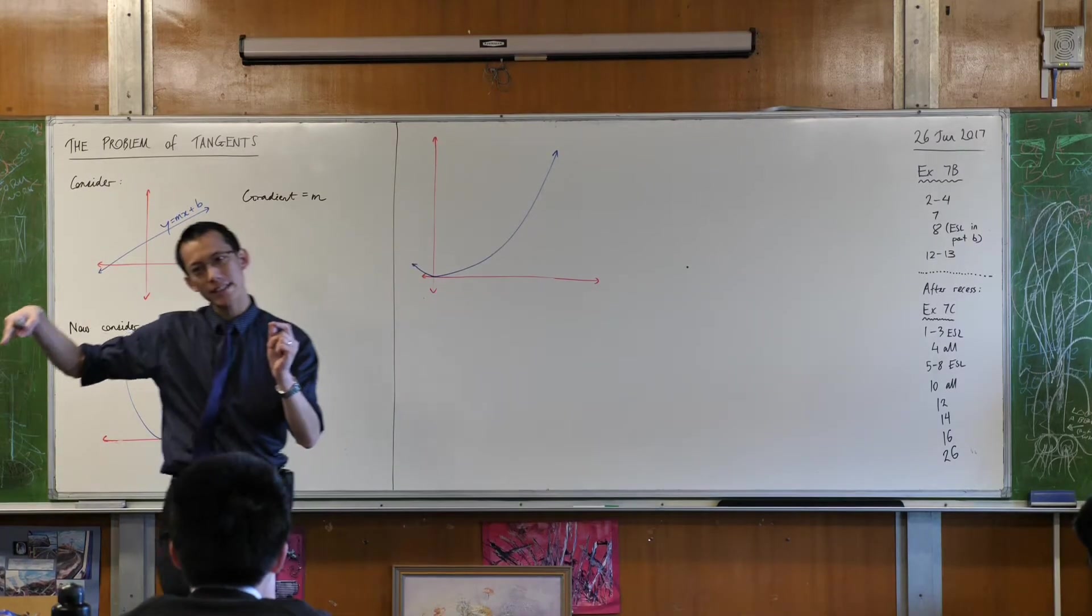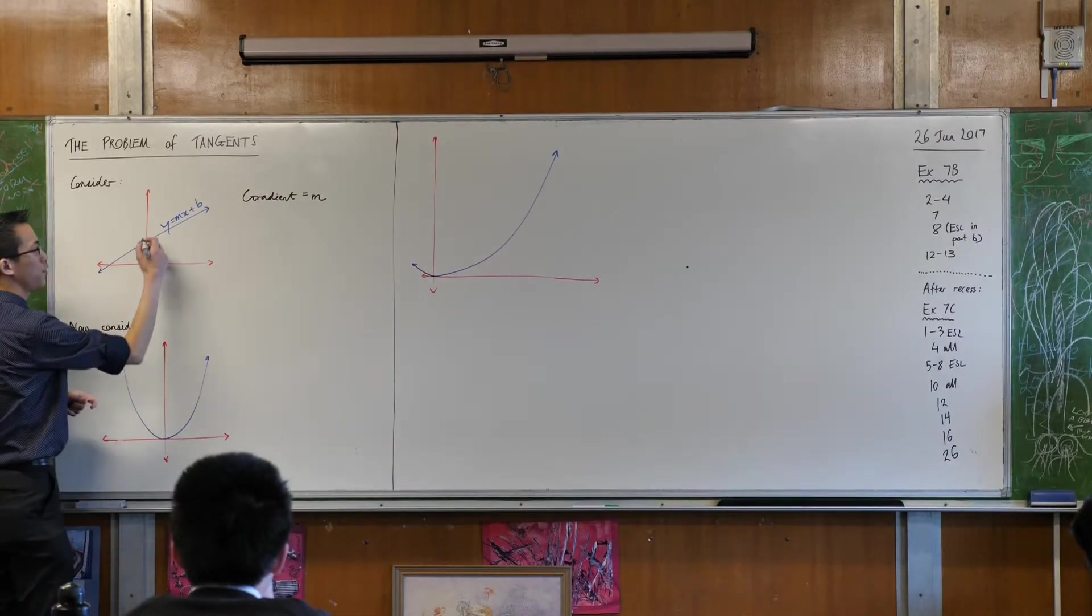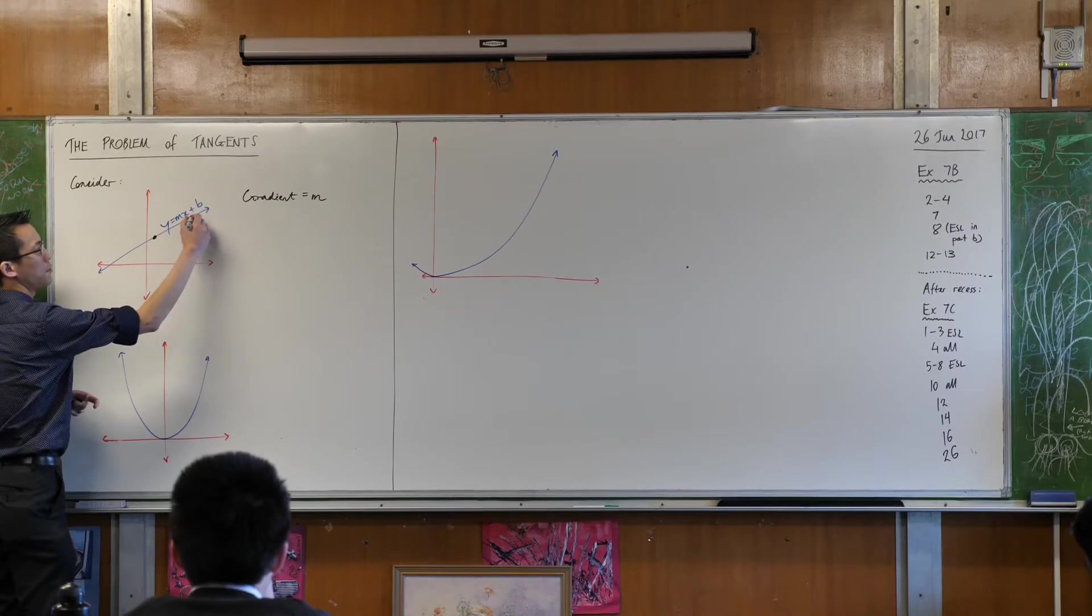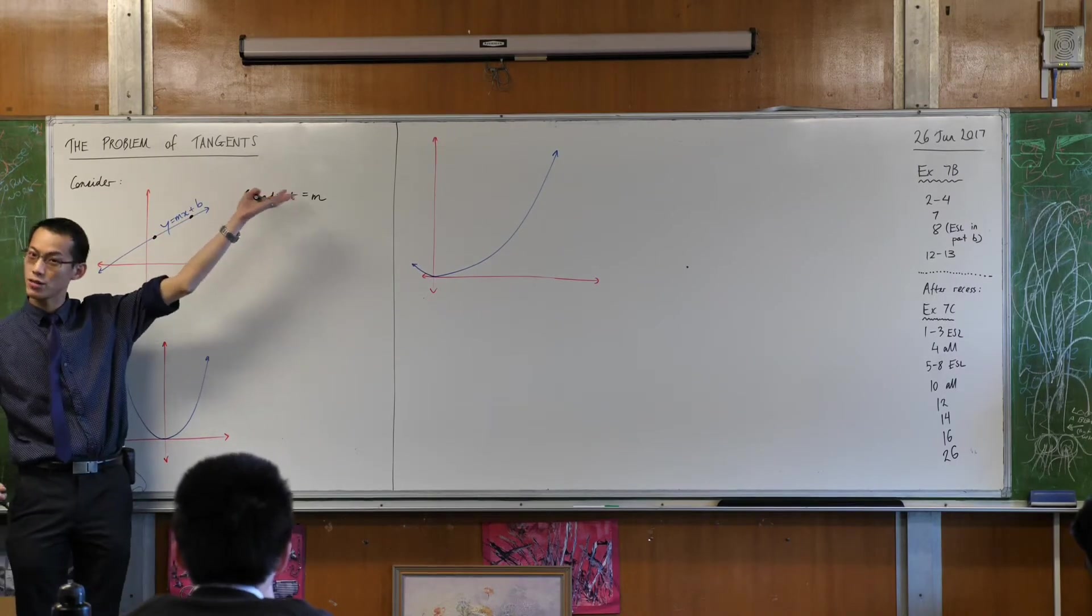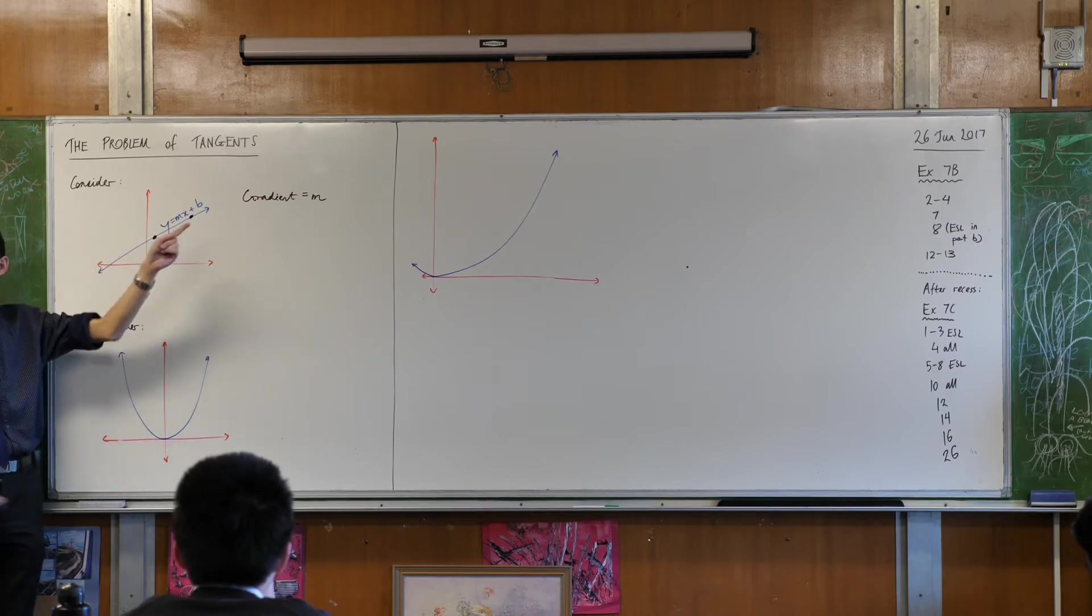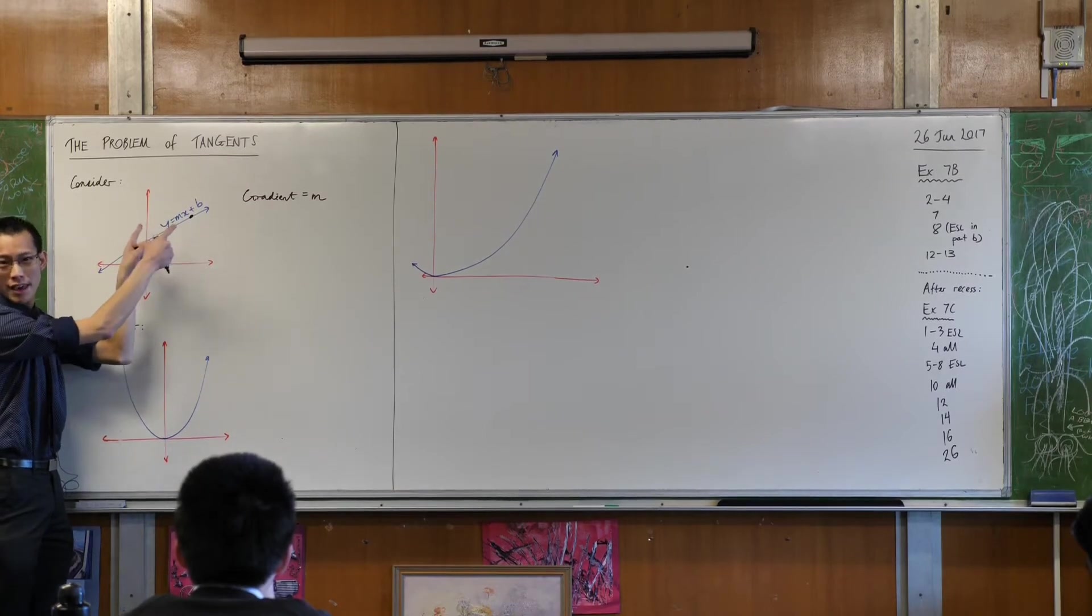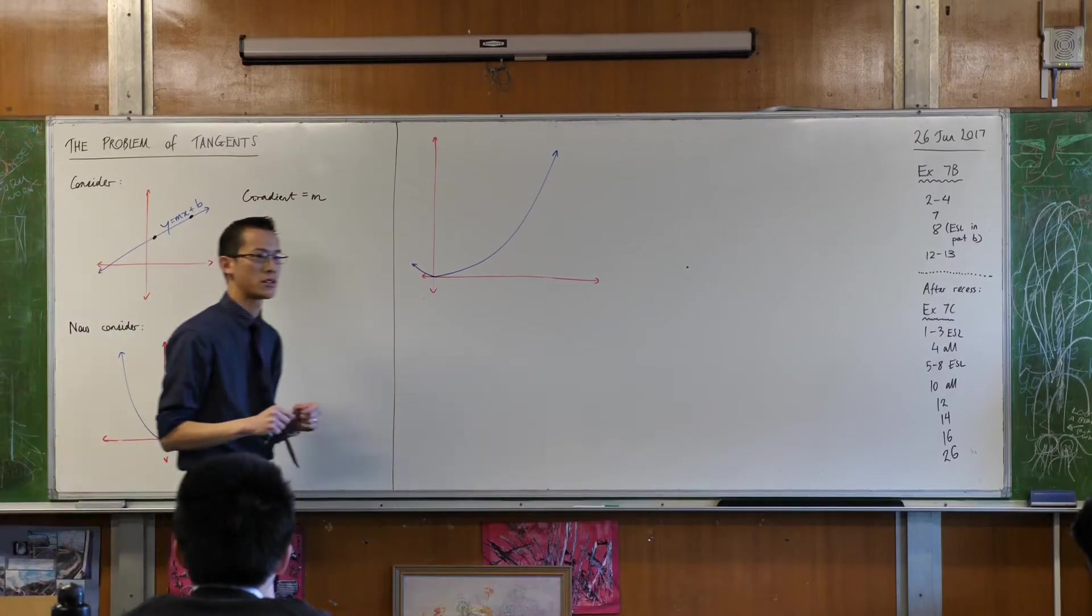However, if you rewind a little bit and go back to if you didn't know that there was this way to write the equation of a line, you could still find the gradient of it. You would just need two points on there. What would you do with those two points?